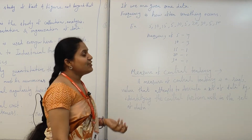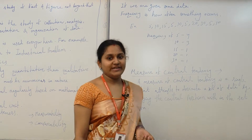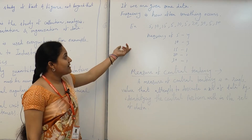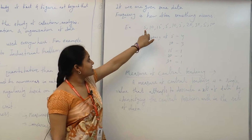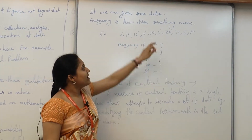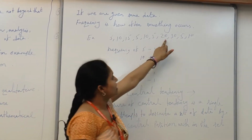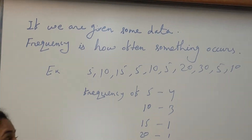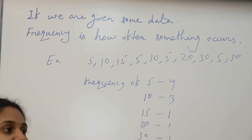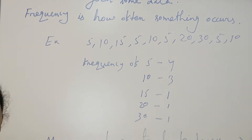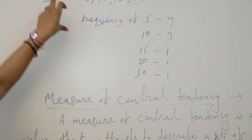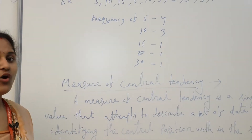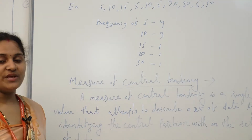Finally, if we are given some data — for example, 5, 10, 15, 5, 10, 5, 20, 30, 5, and 10 — we have many data values here. If some number is repeated, we say this is its frequency. Frequency is how often something occurs.